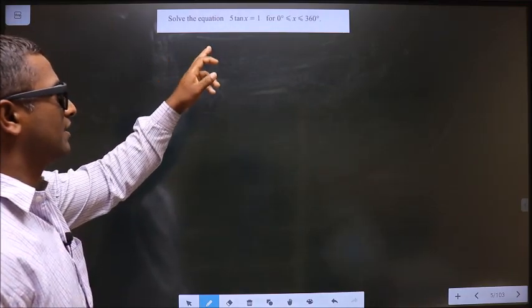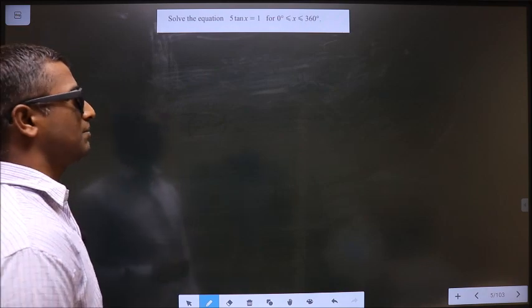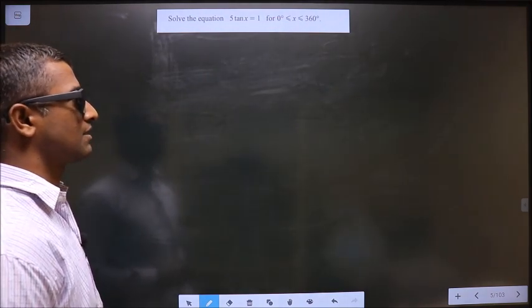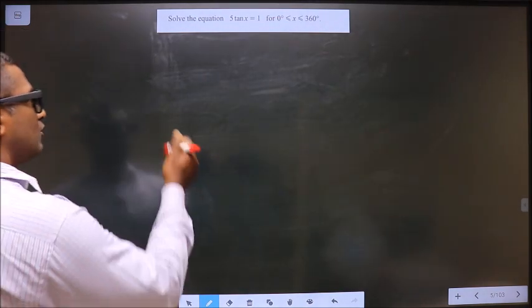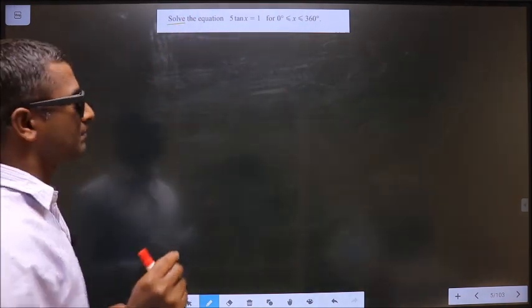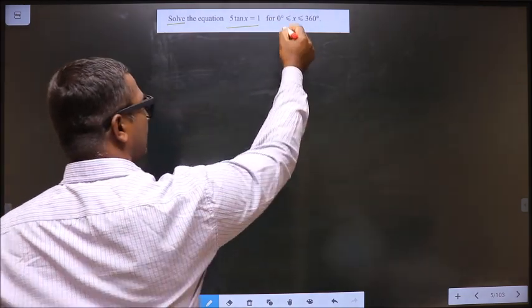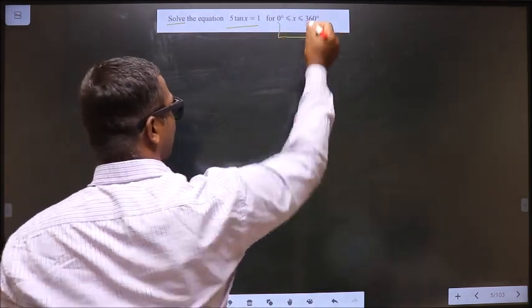Solve the equation 5 tan x equal to 1 for x lies between 0 to 360 degrees. They told you to solve, so you need to find the values for x satisfying this equation and also lying in this interval.